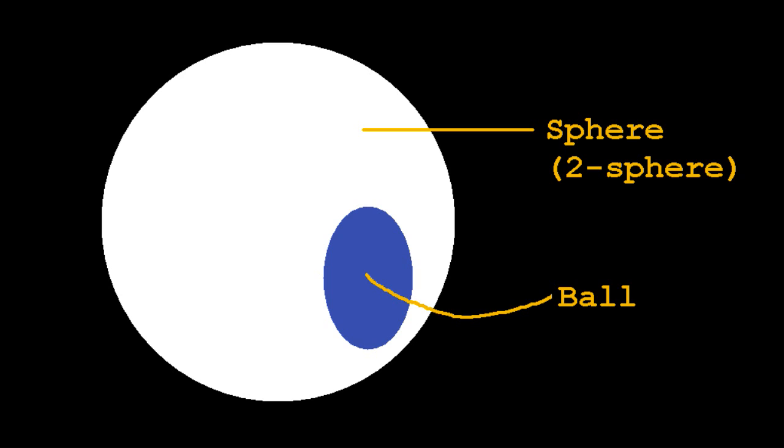A three-sphere would be a three-dimensional object curved around in four dimensions, and is mathematically sound, but unfortunately impossible for us to visualize.